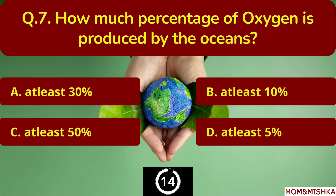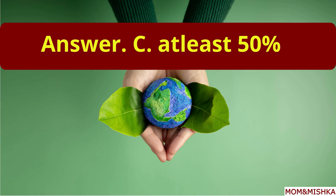How much percentage of oxygen is produced by the oceans? It's at least 50 percent — option C.